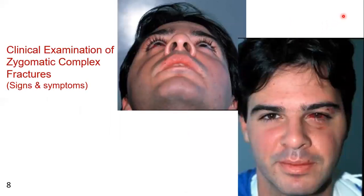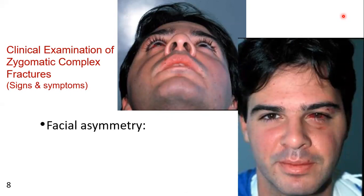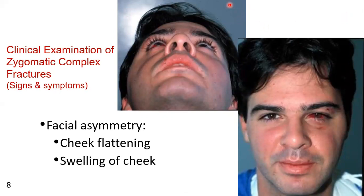Now we come to the clinical examination. On clinical examination, you will find the signs, and you can also note the symptoms told by the patient. The most important is facial asymmetry. You will stand behind the patient and look from above to see the facial asymmetry. By looking from above the patient, you will be able to differentiate the asymmetry between the right and the left.